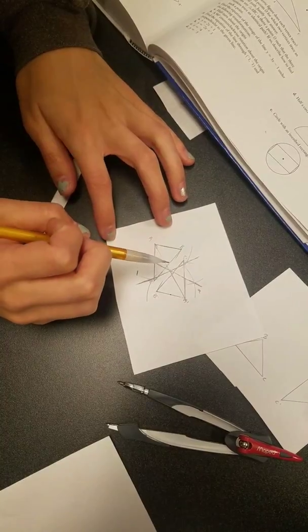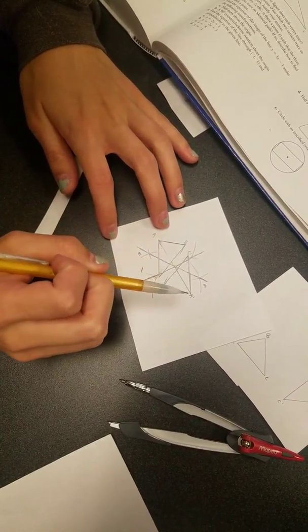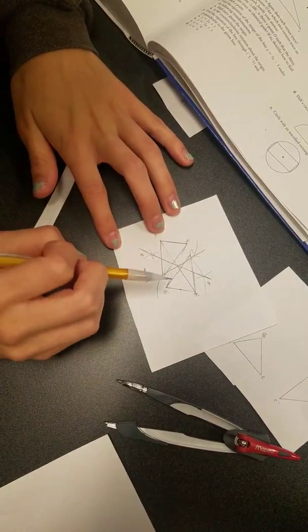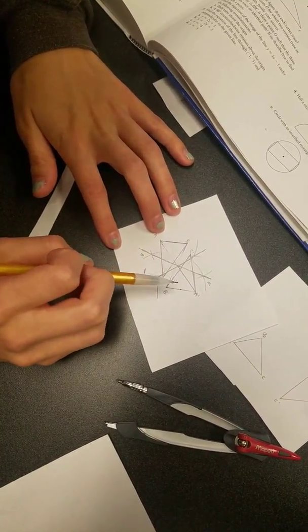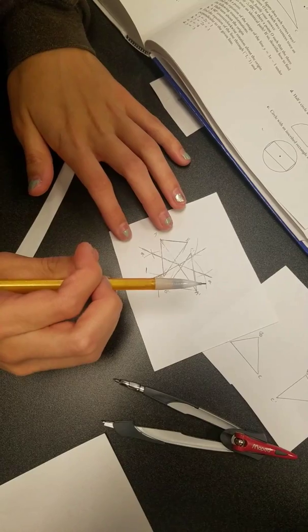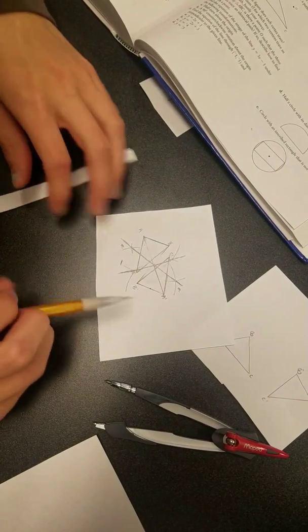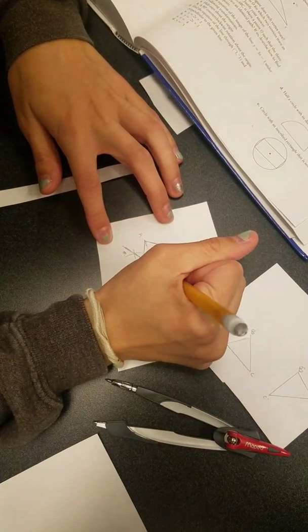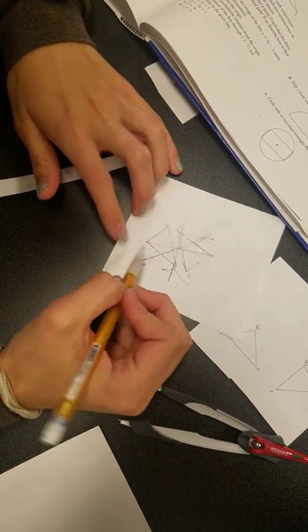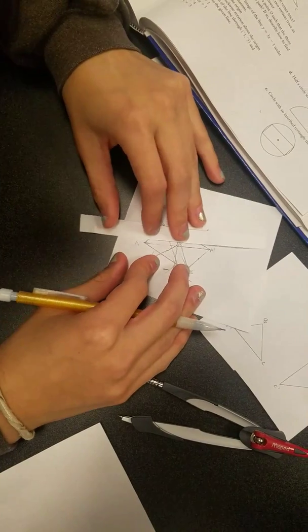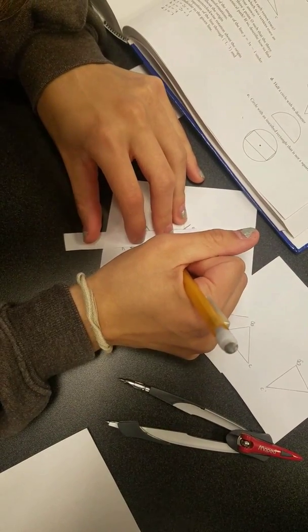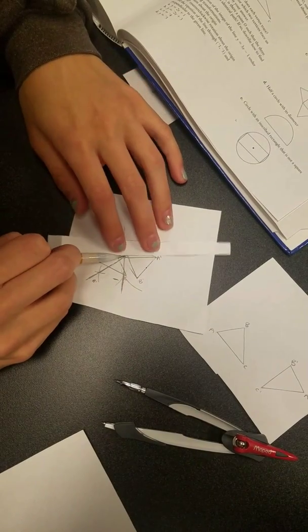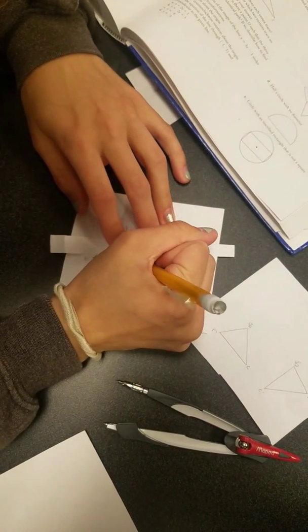And now for the angle of rotation we have to use the center of rotation which is that point O that we found. And you're going to draw a line to the original point, from this point to the original point A. And then you're going to take that same center and draw a line from there to A prime.